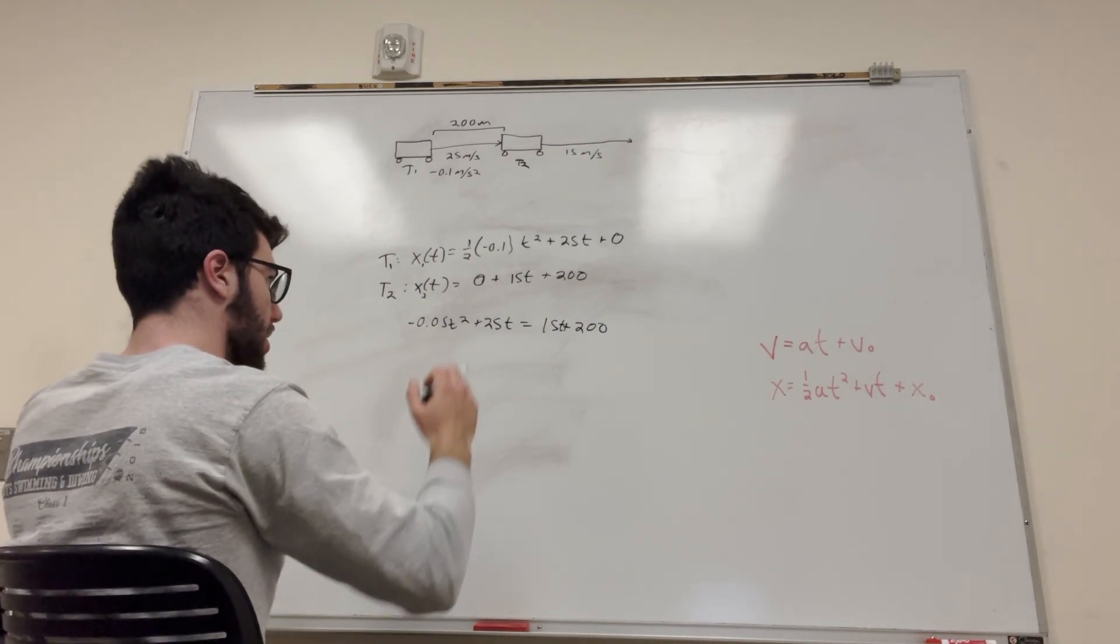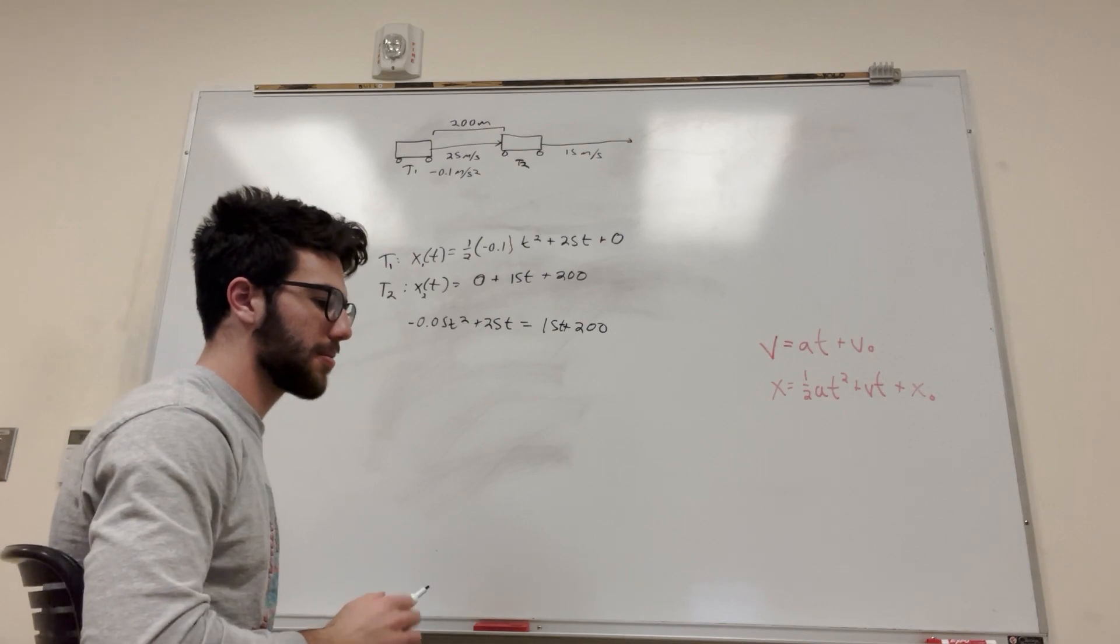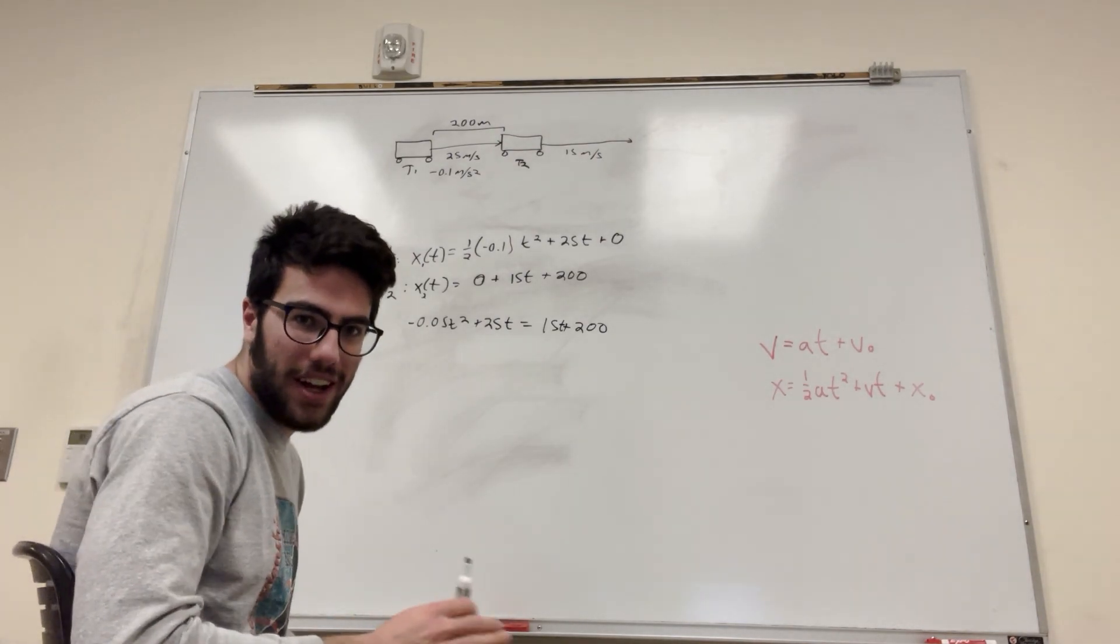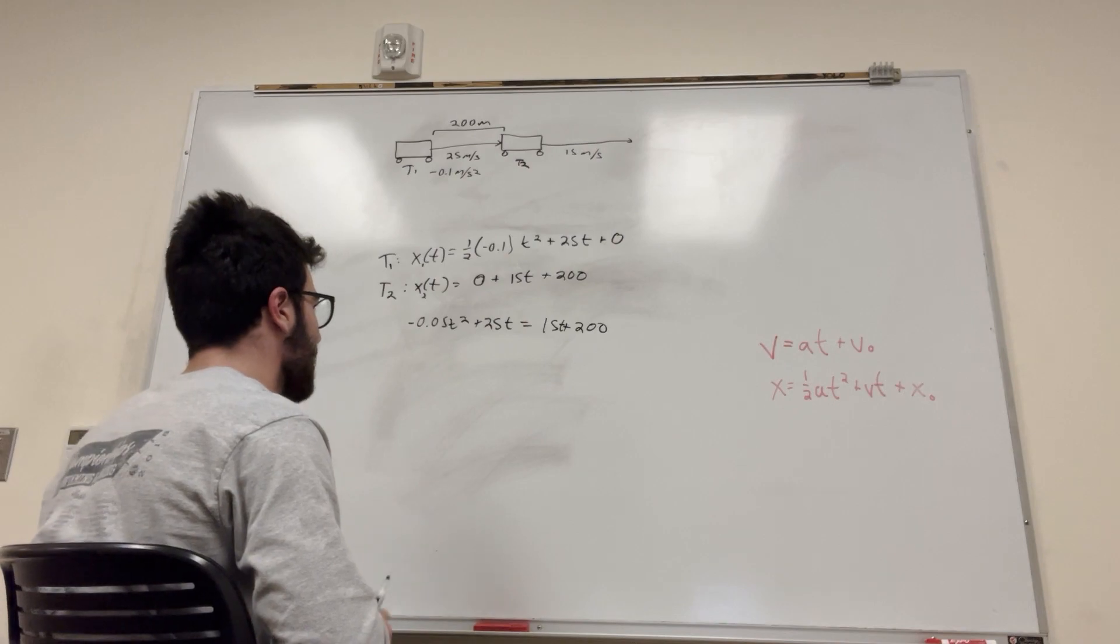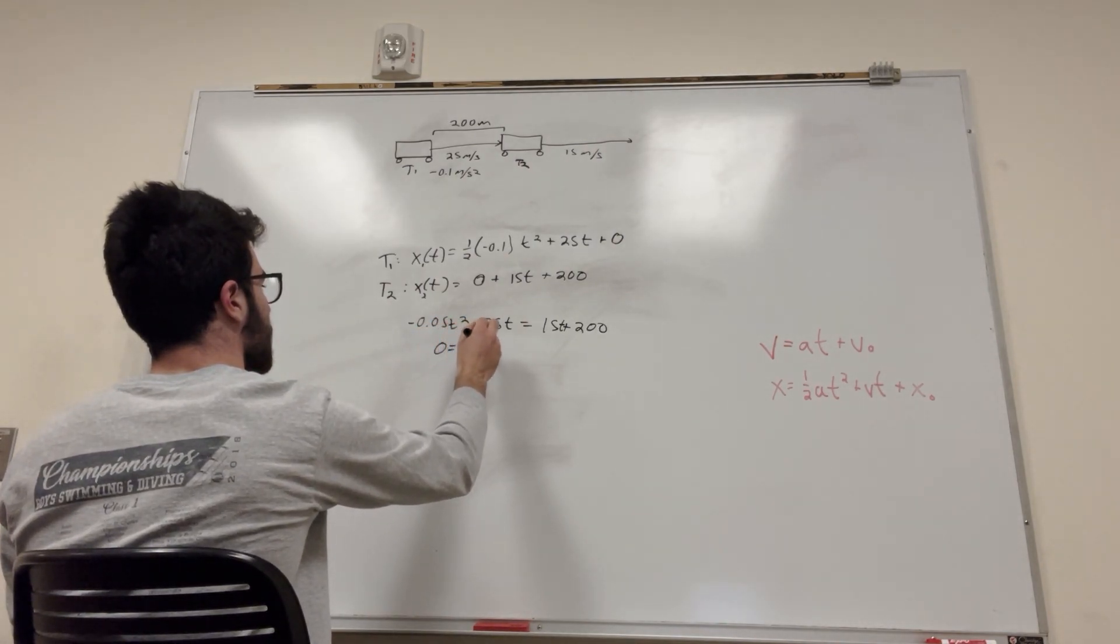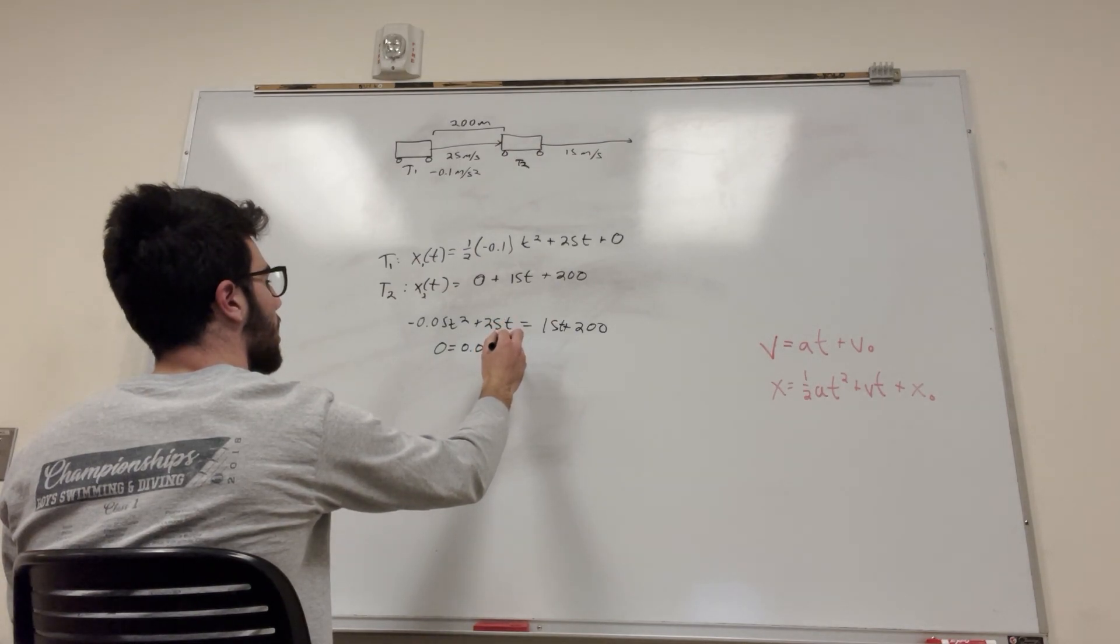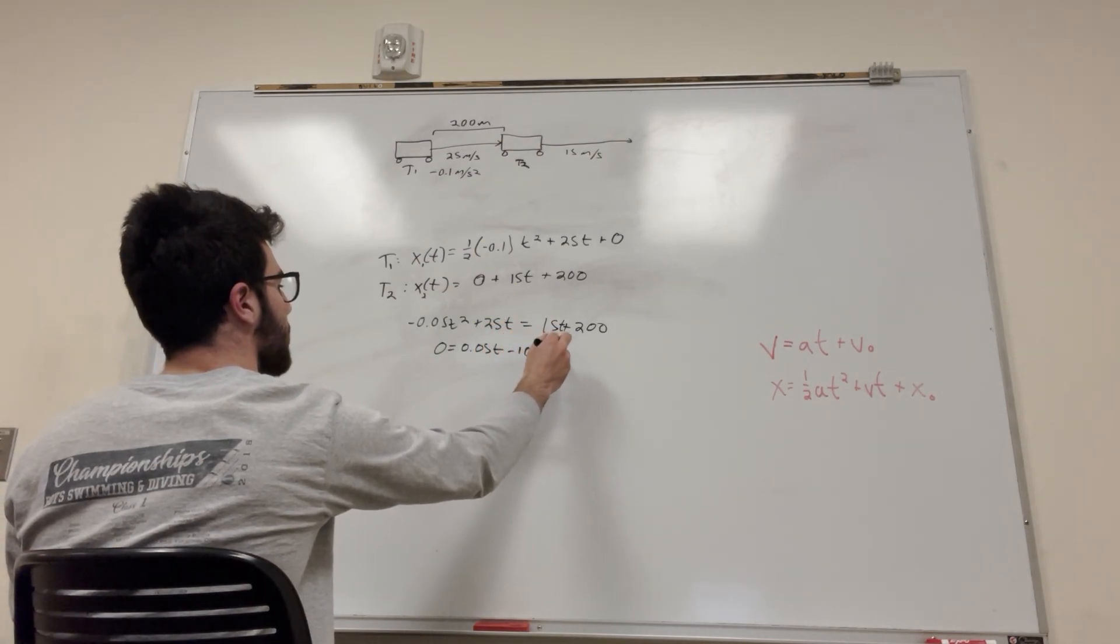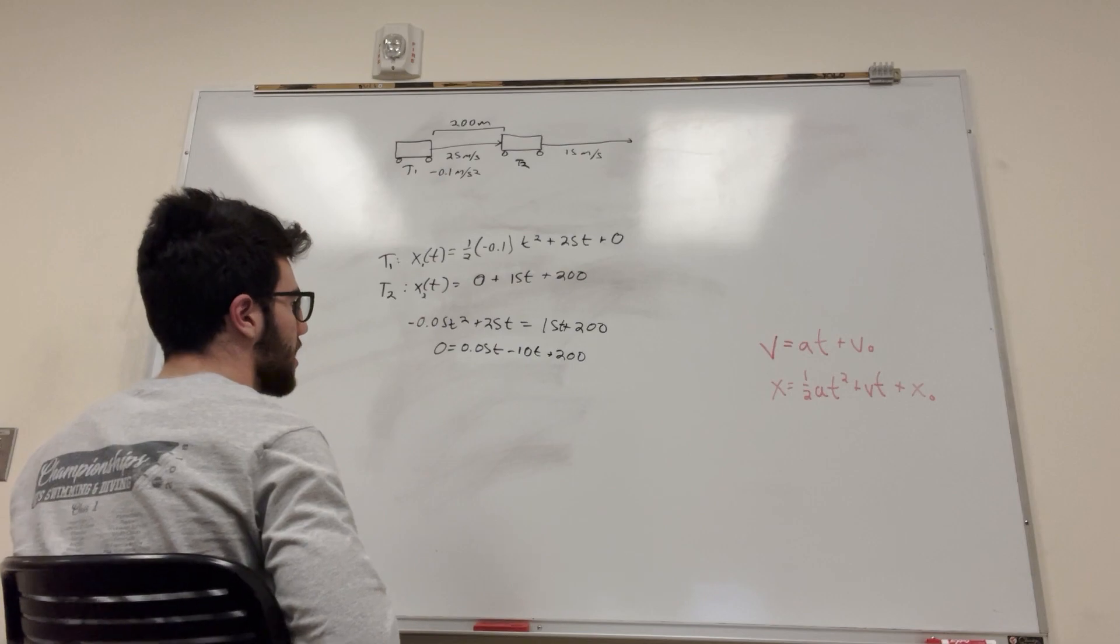Now, let's move everything to one side, because then we can use quadratic formula. Trust me, guys. I'm not a fan of quadratic formula, but we've got to do it. So, 0 is equal to negative 0.05t squared minus 10t plus 200. And then, let's do the quadratic formula.